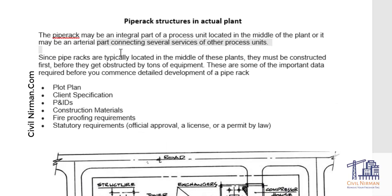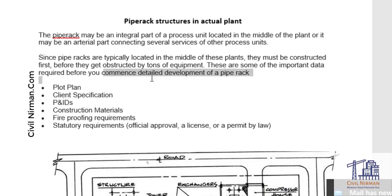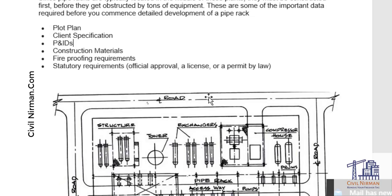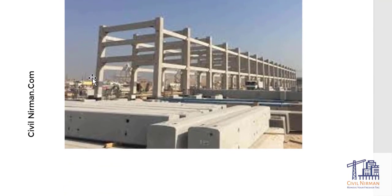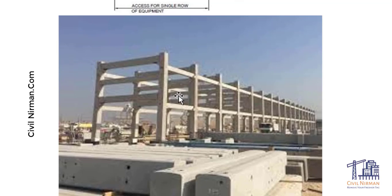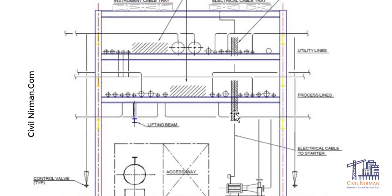Since pipe racks are typically located in the middle of the plant, they must be constructed first before they get obstructed by tons of equipment. Before anything else, the pipe rack is installed first, since it carries most of the pipeline coming from other boundaries and supports those pipes. After that, the remaining structures are constructed side by side.